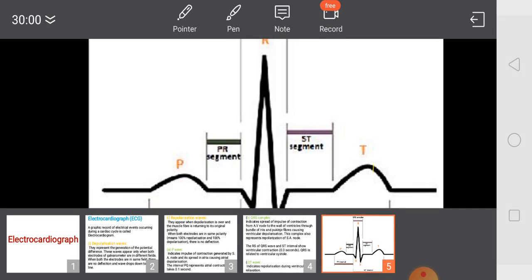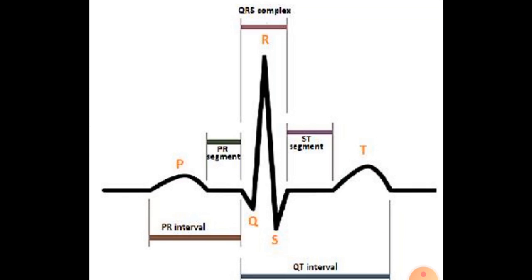Now let's talk about the P wave. P wave represents the electrical excitation, or we can also call it depolarization of the atria. Depolarization of the atria means the atria contract here — contraction of both atria occurs. When we studied the cardiac cycle, we read that first there is joint diastole phase, then atrial systole, in which the atria contract.